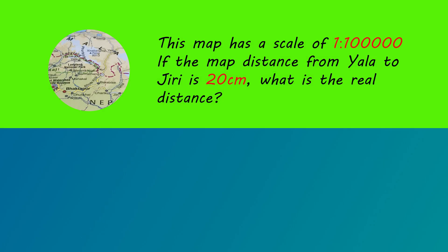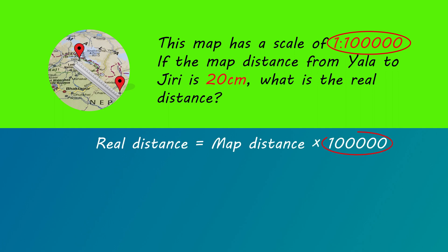Maps use scales that are written as ratios. This map has a scale of one is to one hundred thousand. If the map distance from Yala to Jiri is 20 centimeters, what is the real distance? What this means is that the real distance is 100,000 times larger than the map distance.